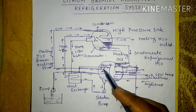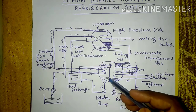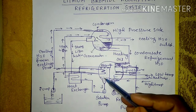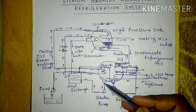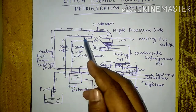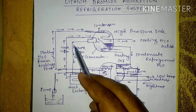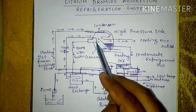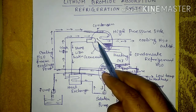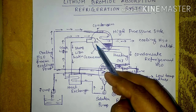In the absorber, liquid lithium bromide is sprayed and mixes with the incoming water vapor, forming a weak lithium bromide solution. This weak solution is then pumped via the solution pump through the heat exchanger to the generator, which contains a heating coil. The heating separates the water vapor from the lithium bromide.